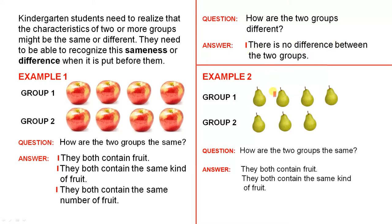Second example: Group 1 has 4 pears, Group 2 has 3 pears. You can ask the question: how are the two groups the same? They'll quickly see that they both contain fruit, and they both contain the same kind of fruit.